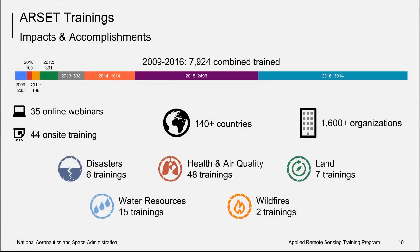Since 2009, RSET has reached almost 8,000 participants from over 140 countries, and you can see the statistics here. Our health and air quality themed trainings were the ones we started off with first, which is why you see a greater number of those trainings compared to other themes. But we've had great interest in water resources, disasters, land, and wildfire-related trainings as of recently.